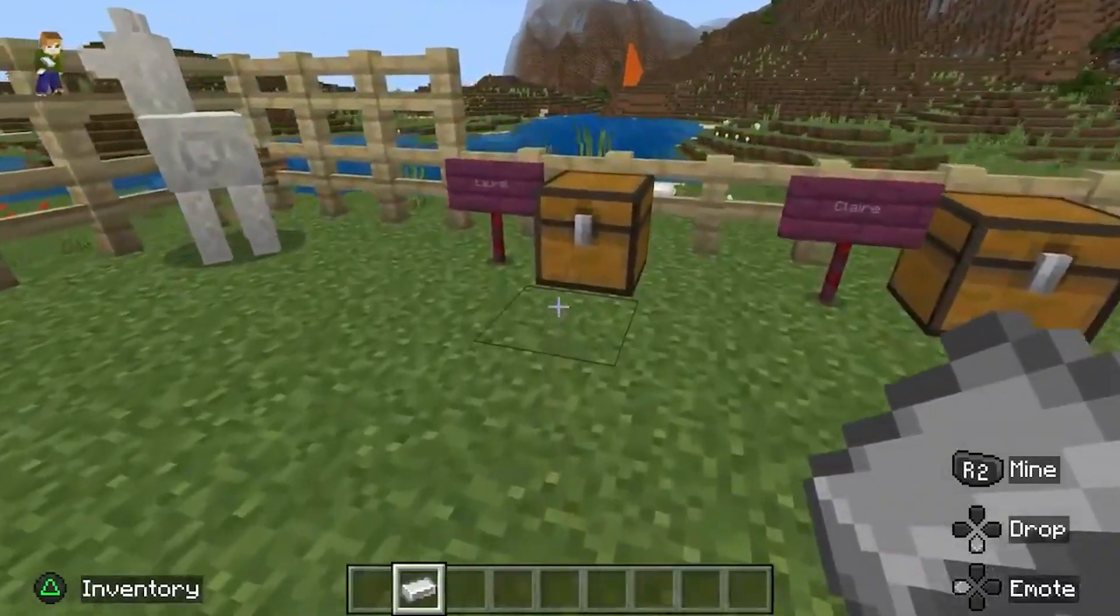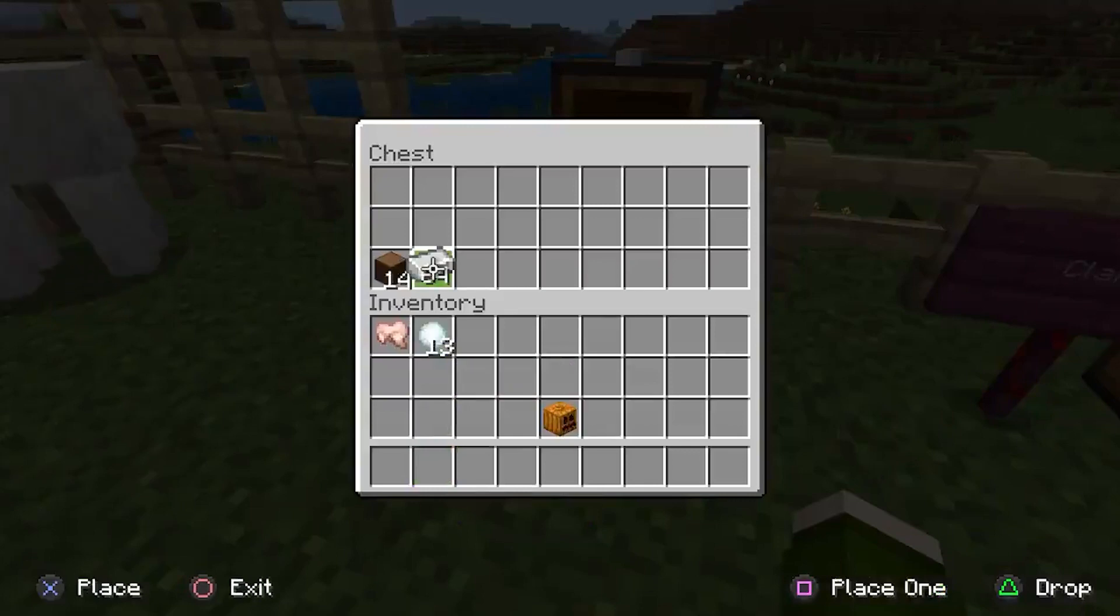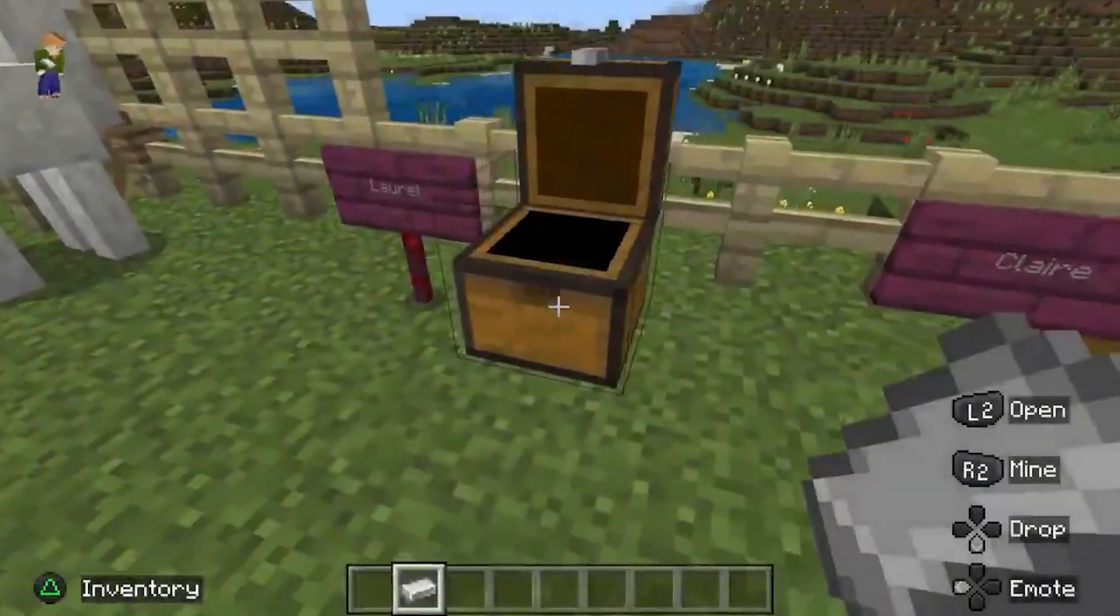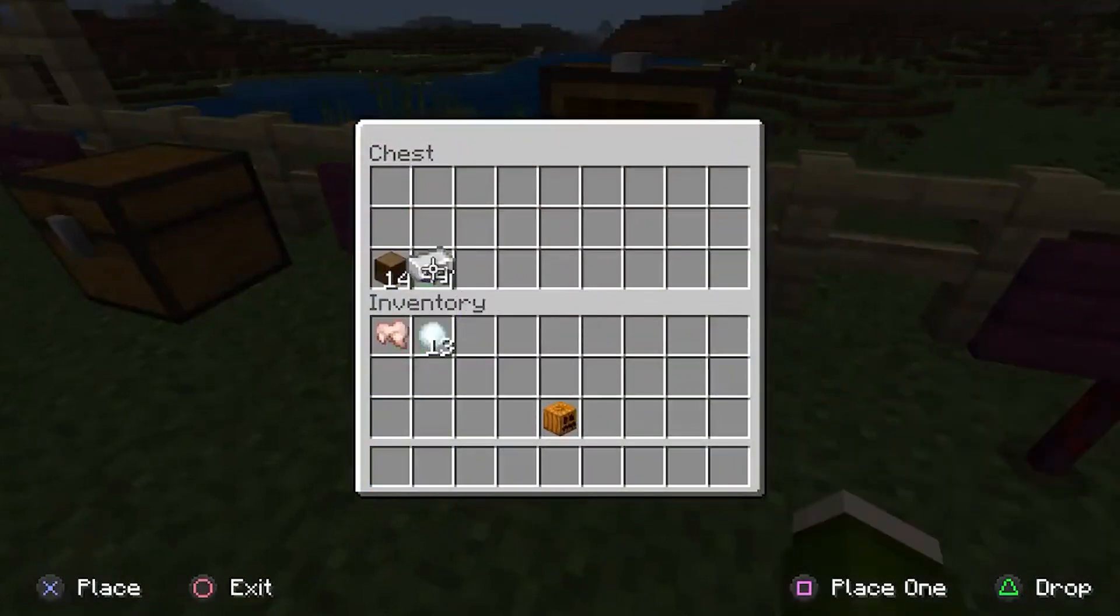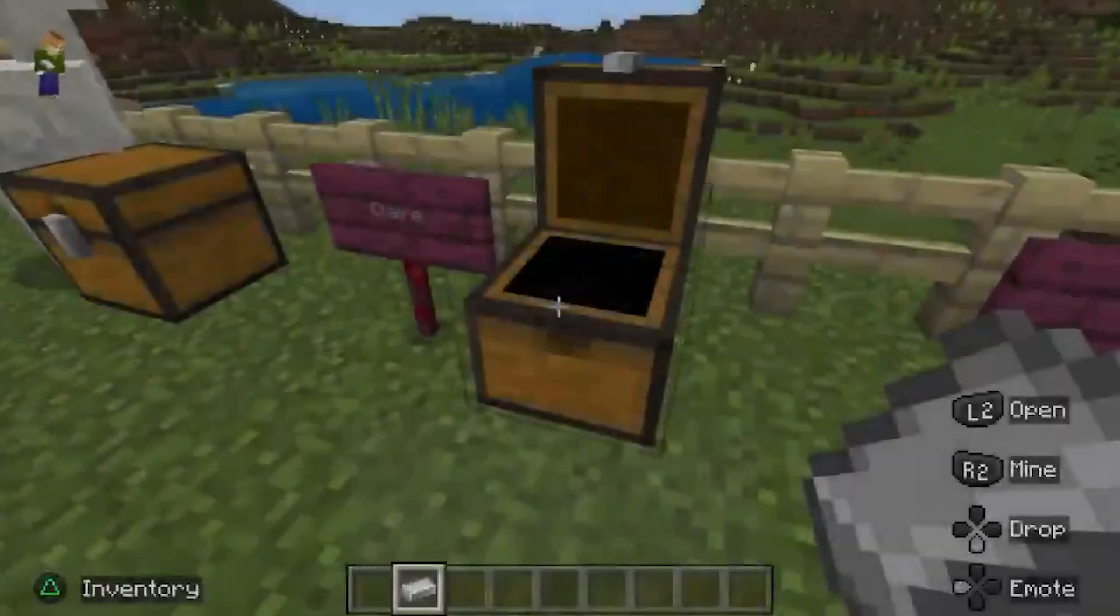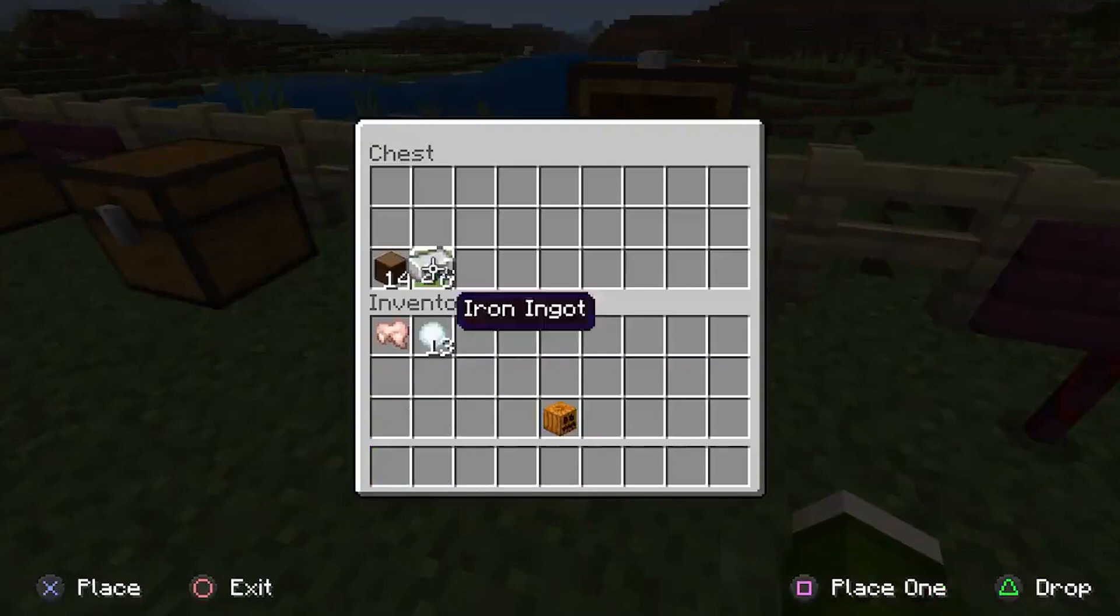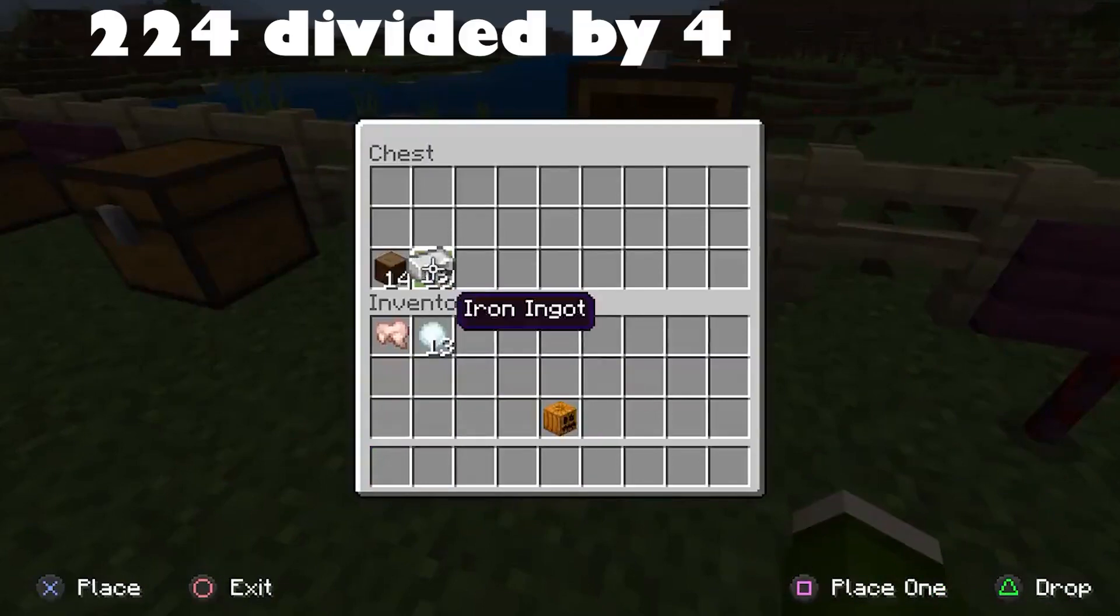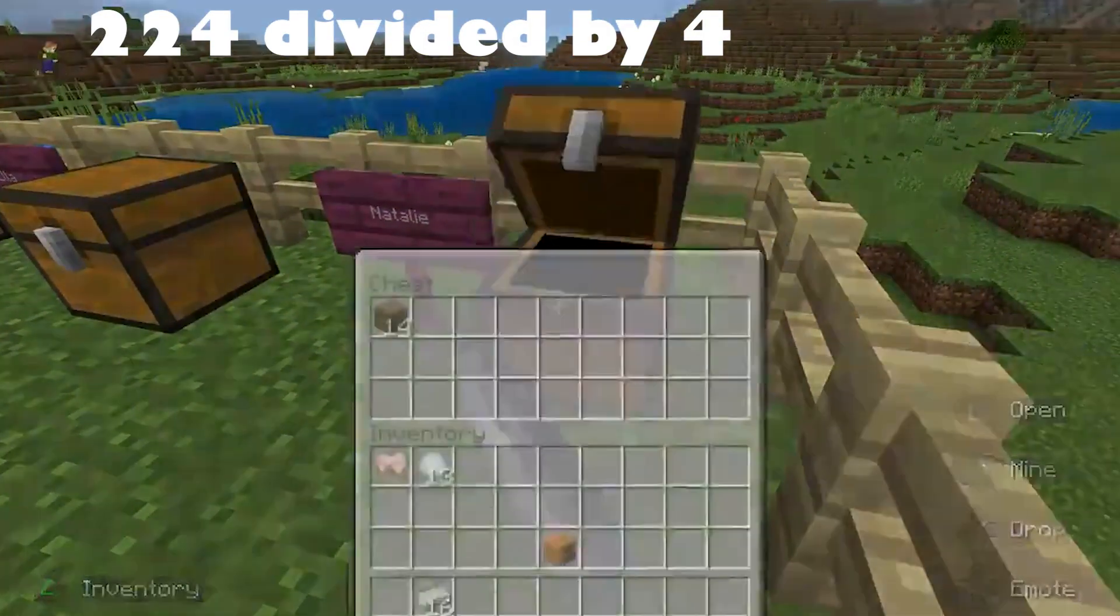All right. Once again, we'll come back here and let's give each friend 16 iron ingot. All right. And then after we're done giving all the friends their supplies, then we are going to try a problem that's a little bit bigger. So let's try a problem that is 224 divided by four. We'll go back to the whiteboard and give this larger problem a try.